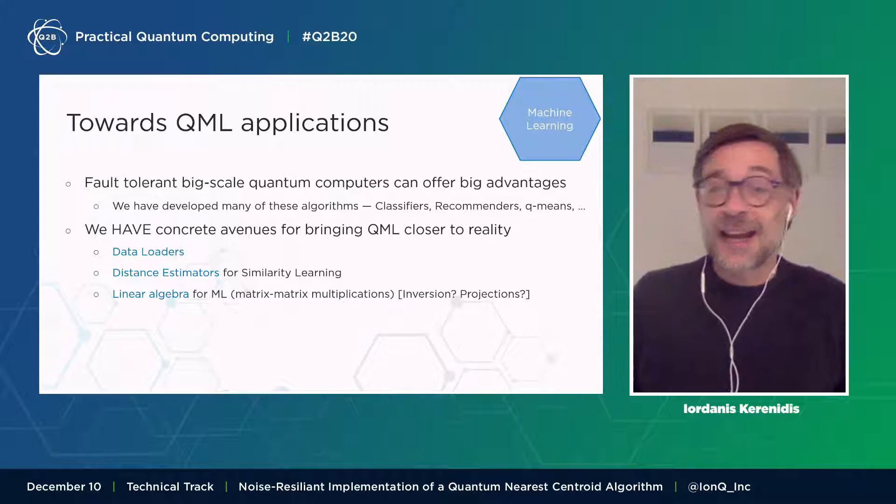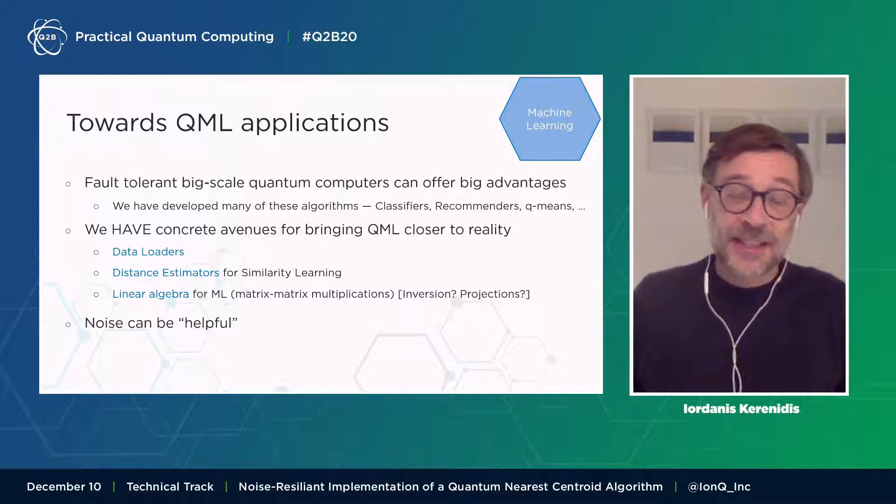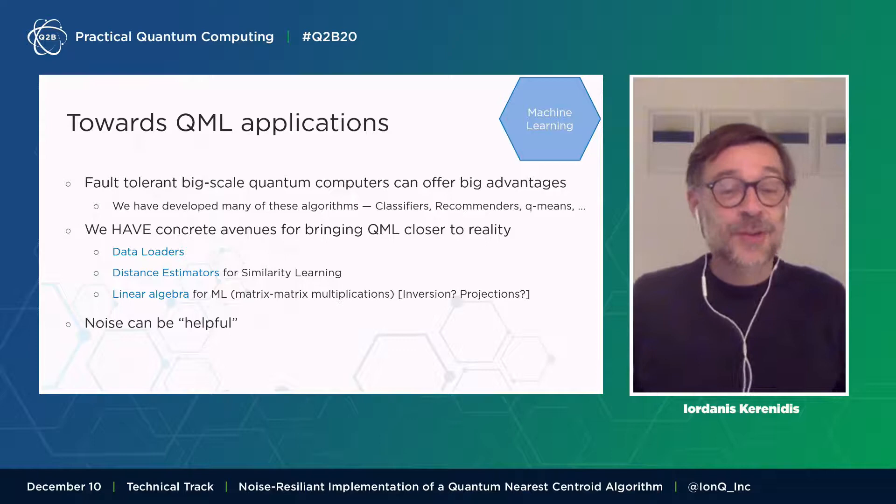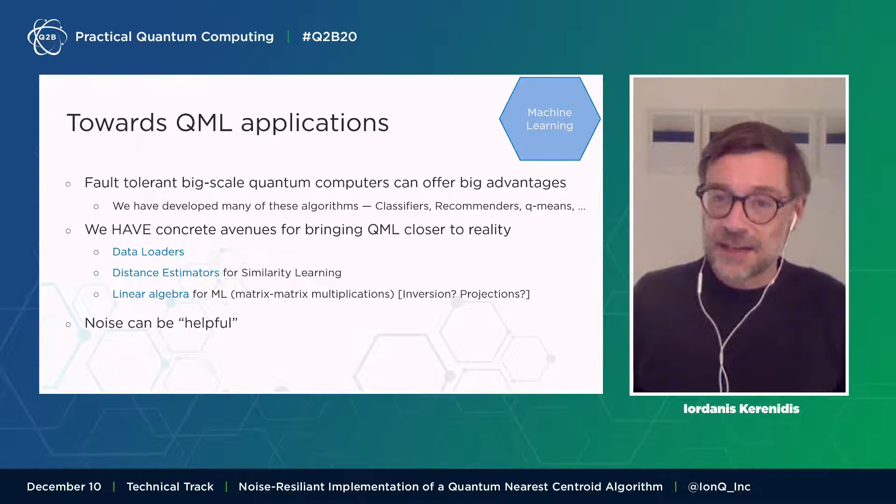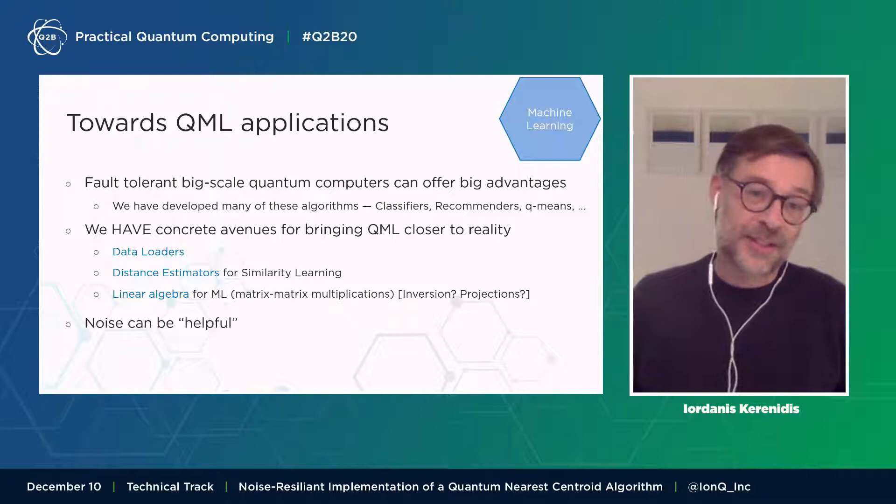We also have ideas on how to bring even more impactful quantum tools like linear algebra closer to NISQ era. The third reason why we think that quantum machine learning is a very interesting area for quantum application is because noise is something that can actually be helpful in machine learning. Many times in classical machine learning, we inject artificially noise into our computations, first in order to make our algorithms more robust, and second even to get some feeling of data privacy. So here we can use the noise which is inherent in the NISQ machines actually to our advantage.